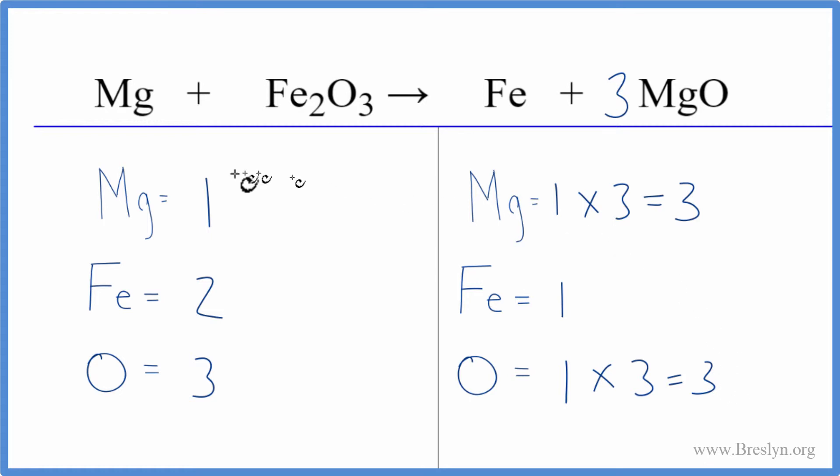Now it's pretty easy to balance both the magnesium and the iron because they're all by themselves. I need three magnesiums on this side. I'll put a three here, one times three. That gives me three of those. Those are balanced.